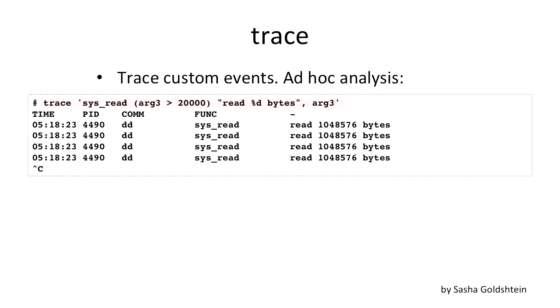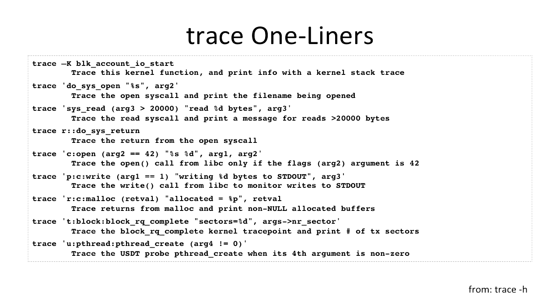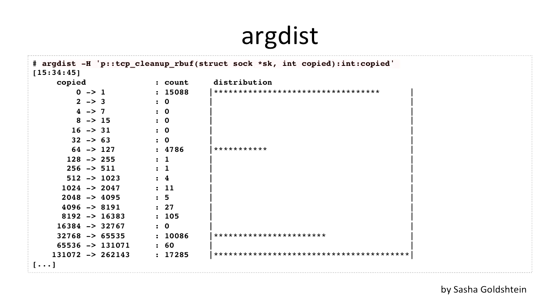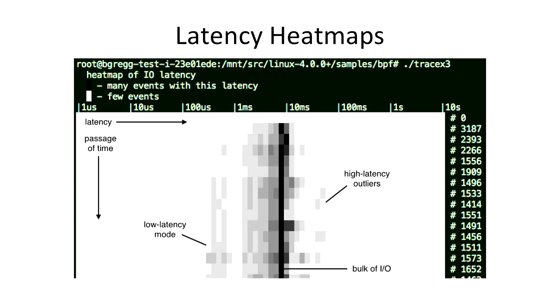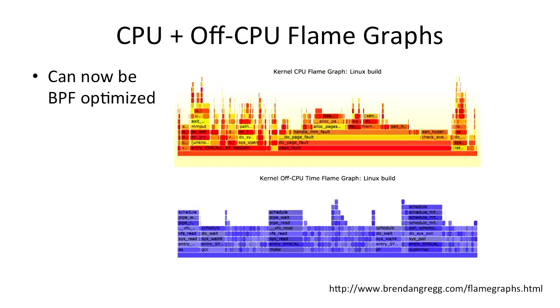And I was demonstrating some of that earlier. So it's sys_read, if the requested bytes was over 20,000, print out a string. And in the help message of trace there are a bunch of one-liners. argdist is something similar for argument examination. Visualizations I've talked about, because I think that's actually where most of us will use these tools. It's not just latency heat maps. There's also the flame graph visualization. Has anyone used flame graphs?